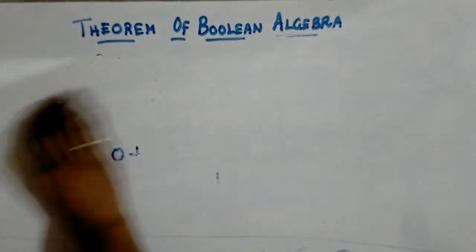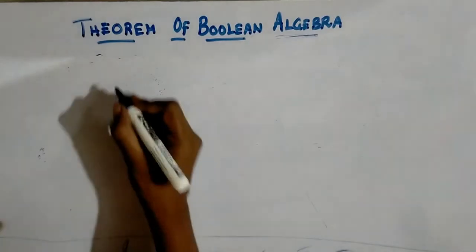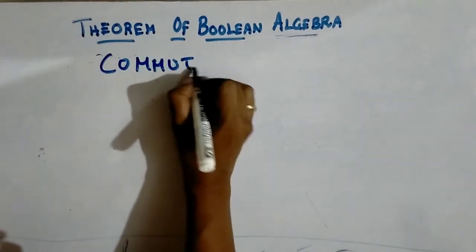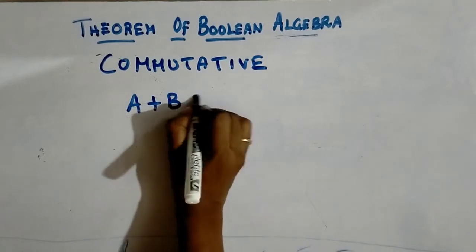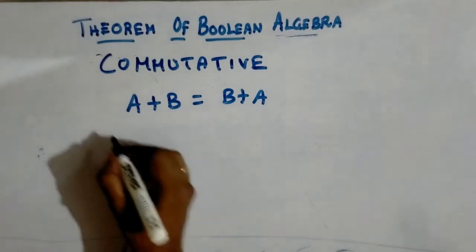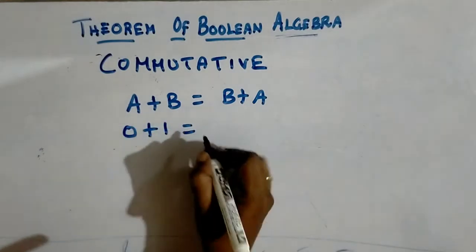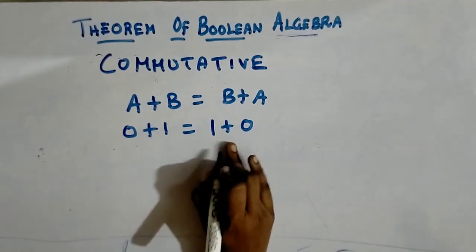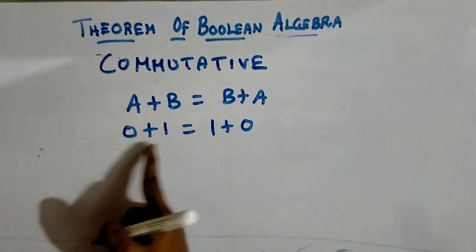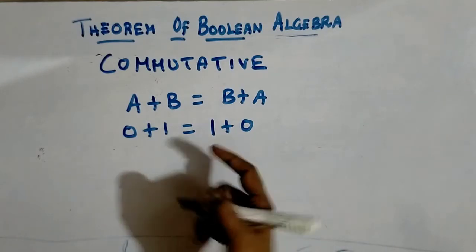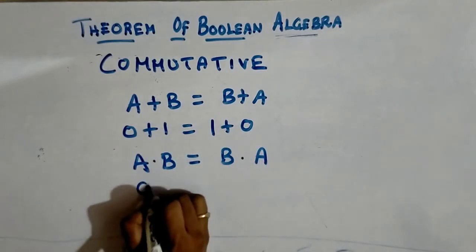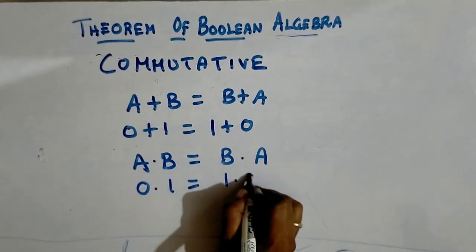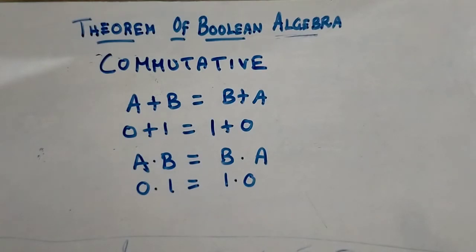The next one is commutative. We already know about commutative — you would have studied this in math. The same law applies here: A plus B equals B plus A. For example, 0 plus 1 is the same as 1 plus 0. Even if you change the order of the input, we will get the same value. Similarly, A dot B equals B dot A. When you change the order of the inputs, we still get the same output. That is the commutative law.